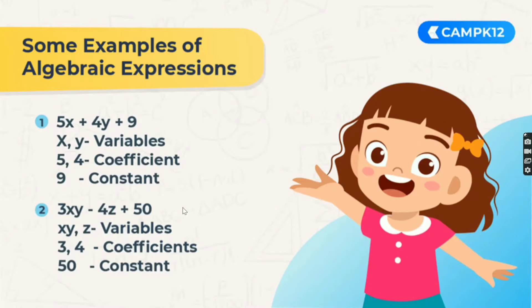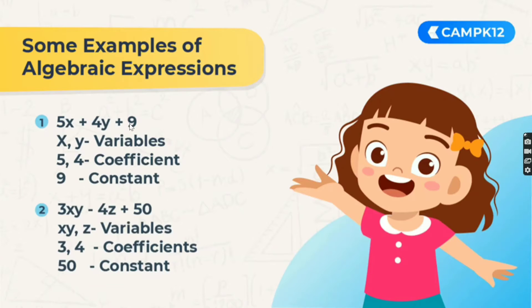Let's take some examples of algebraic expressions and try to spot the variables, coefficients, and constants separately. In the first example, 5x plus 4y plus 9: the alphabets x and y are attached to numbers 5 and 4 respectively, so x and y are the variables. The numbers attached to the variables, 5 and 4, are the coefficients. And 9, the number without any variable attached to it, is the constant.